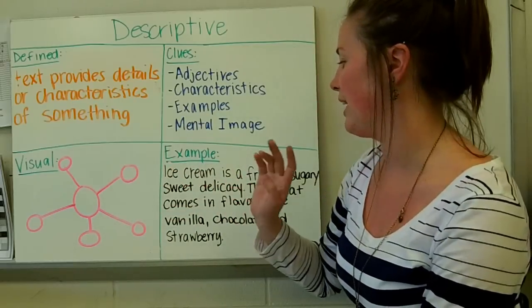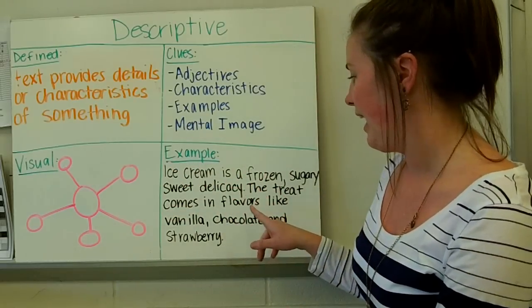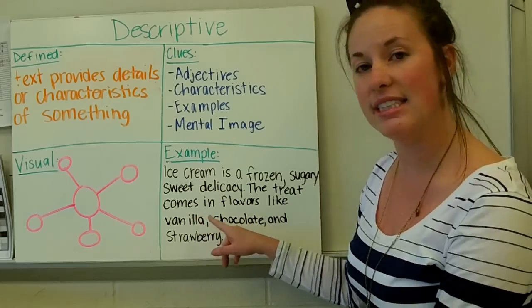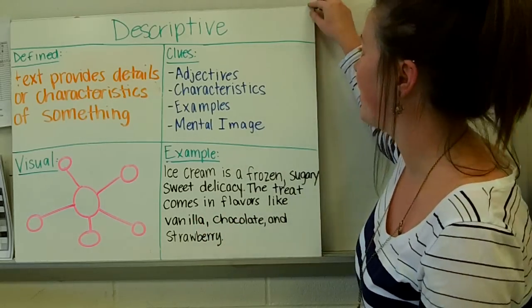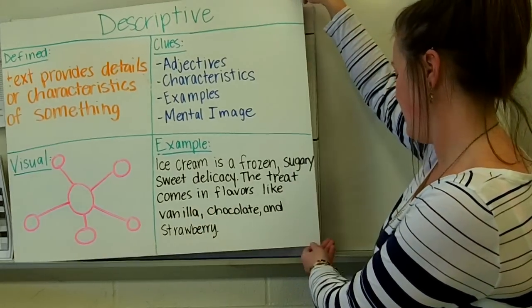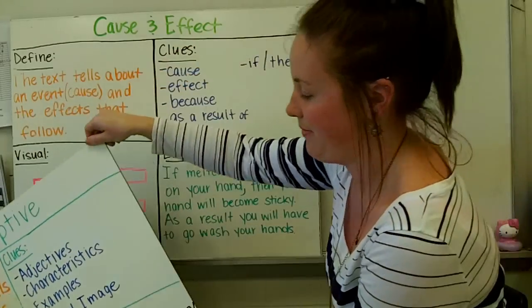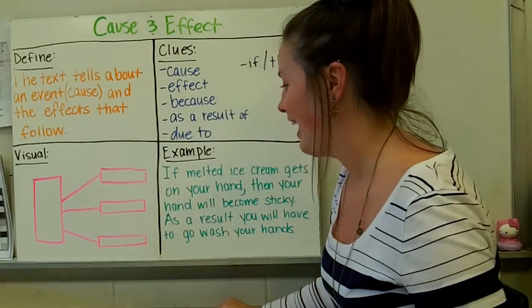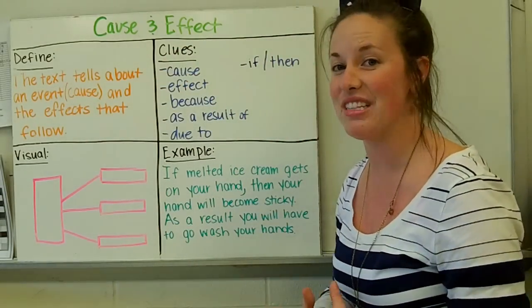Like frozen, sugary, sweet. I could also put in the different kinds like vanilla, chocolate, and strawberry. Let's go to the next text structure.